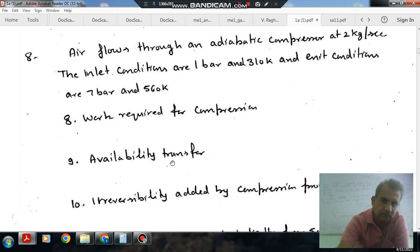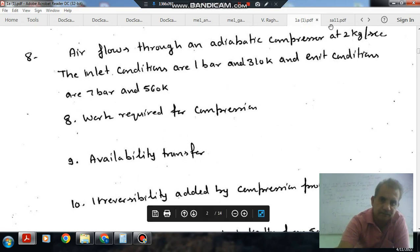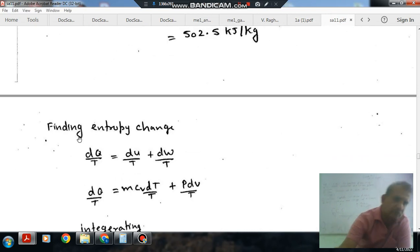Second question is availability transfer and third is irreversibility. So, to find out both of these we have to find out the Entropy generation during this process.